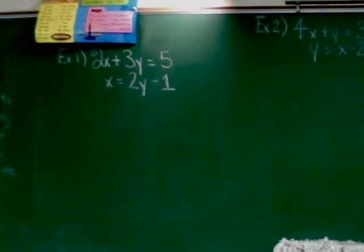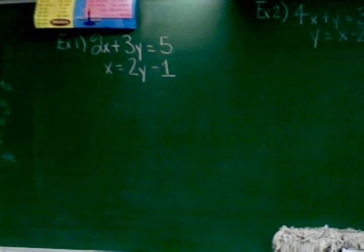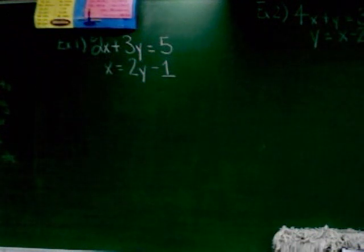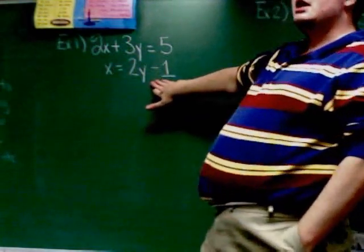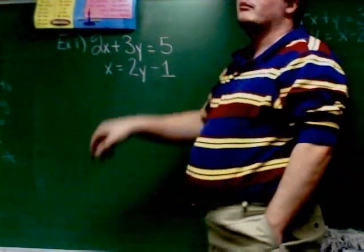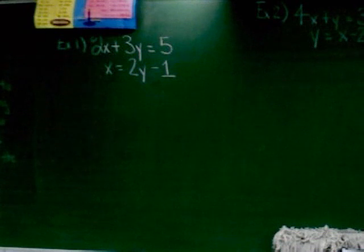2x plus 3y equals 5 and x equals 2y minus 1. The first step I've said I have to get one equation into x equals something or y equals something form. If you look at the second equation here, you can see it is in that form. It's x equals something form. Does it matter which one it is? No. As long as you have one of them, so it's x equals or y equals, it doesn't matter. X and y, they both work fine. There's no pro over one to the other.